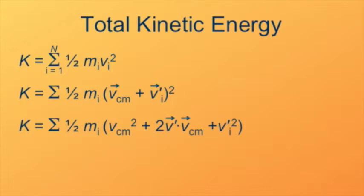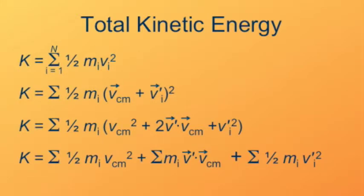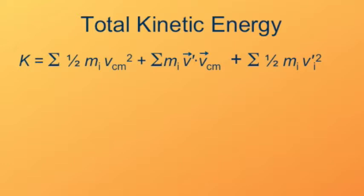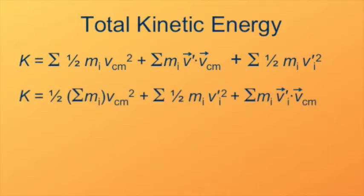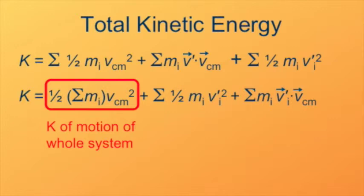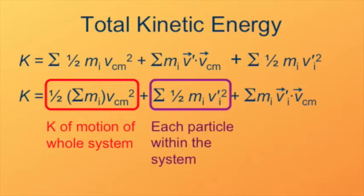Next, I'll distribute the one-half m through each of these terms to get three separate summation terms. In the first term, the summation of m sub i is the only part that needs the summation — that sum of the different masses is just the total mass of the system. So the first term is just the kinetic energy from the motion of the whole system: one-half the total mass times the square of the velocity of the center of mass. The second term is very similar — each term there is the kinetic energy of each individual particle relative to the center of mass. That's what we're setting out to prove. But we have this additional cross term.